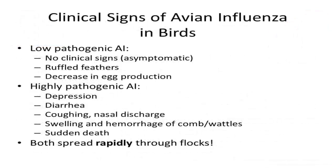The clinical signs of avian influenza in birds vary depending on the pathogenicity of the virus. For low pathogenic viruses, birds may be asymptomatic, meaning they do not show any clinical signs, or they may show signs of mild disease, such as ruffled feathers or decreased egg production.